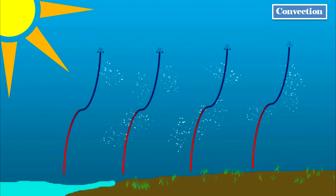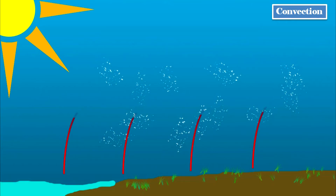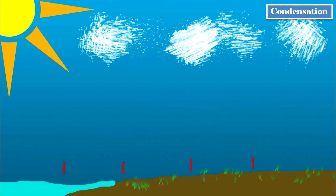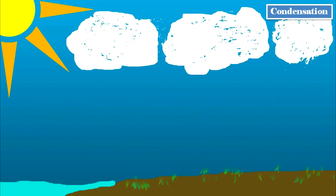Eventually, the gas becomes cold enough that it turns back into a liquid. As it does that, the water grabs onto tiny particles of dust that are floating around in the air and creates tiny drops of water. This is called condensation. Because water molecules really like to stick together, these drops start to latch on to each other. Eventually, enough of these drops get together and form those puffy white clouds that you and I see.